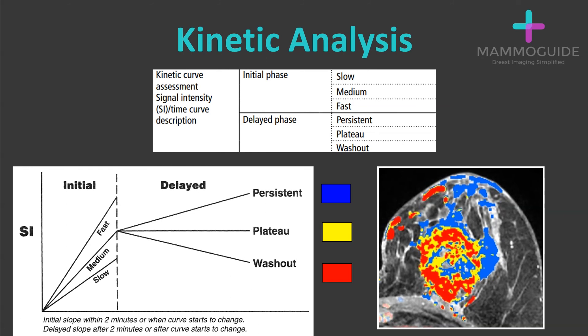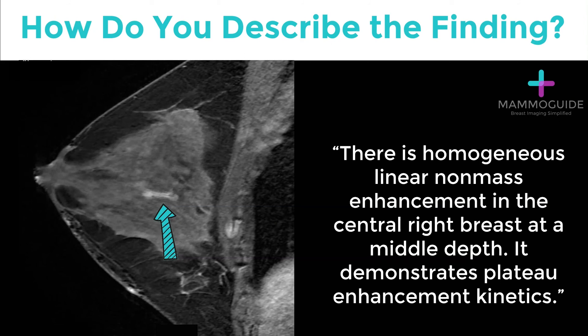This large mass in the central breast is predominantly washout enhancement. Now, putting it all together, describing this finding in the right breast, you would say: there is homogeneous, linear, non-mass enhancement in the central right breast at a middle depth. It demonstrates plateau enhancement kinetics.